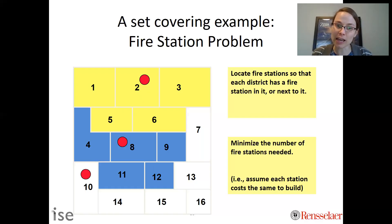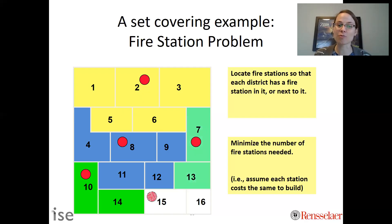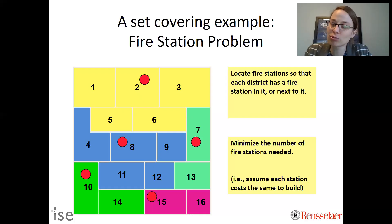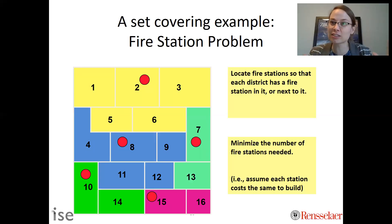We could then build in district 10, and that would cover 10 and 14. We could build in 7, which would cover 7 and 13, and we could build in 15, which would cover 15 and 16. What I just showed you is a feasible solution to the set covering problem — it's feasible because the constraint that every district has a fire station in it or next to it is satisfied.